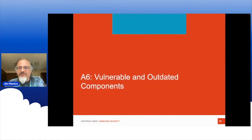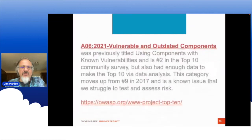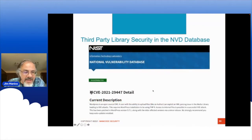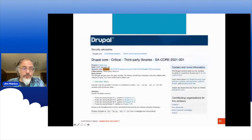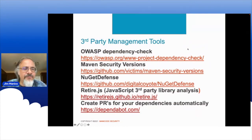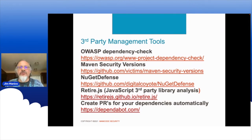A6: vulnerable and outdated components — something we've known since 2013 as a top-tier issue. WordPress with an insecure third-party library? Critical issue. Drupal third-party library? Critical issue. Some of the biggest frameworks in the world have this problem. Please use a scanner of some kind and make sure you're not allowing insecure libraries in production.